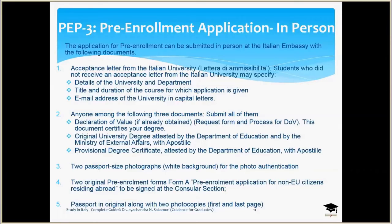They will also ask you questions about how you plan to support your education, why you are going to Italy, and which university you are targeting. Once you answer these questions satisfactorily, they will give you the pre-enrollment stamp. With that done, you can proceed to the visa process.